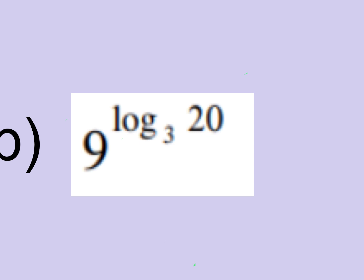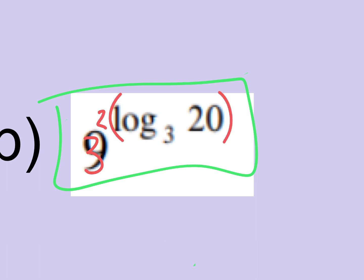Wait — are you sure it's 400? Let's verify. The theory is: three becomes three squared; the two gets multiplied by the whole log; that means this moves up here; the bases are the same; the answer is this, which is 400. And you could put it in a calculator to confirm — and it worked. The answer is 400.